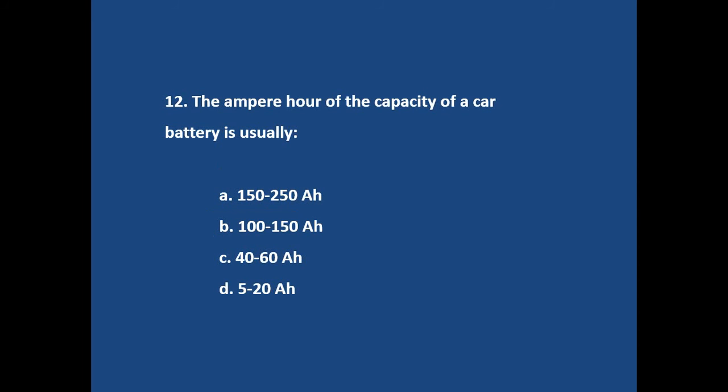Question number 12. The ampere hour of the capacity of a car battery is usually? Answer is option C. 40 to 60 ampere hour.